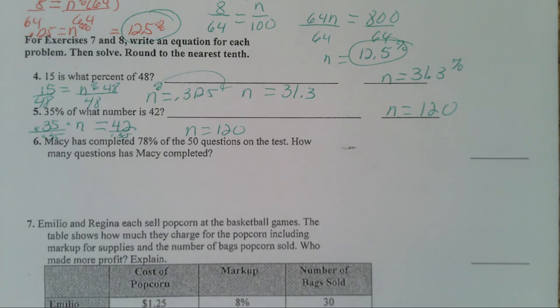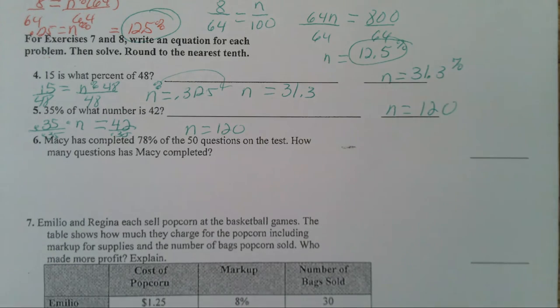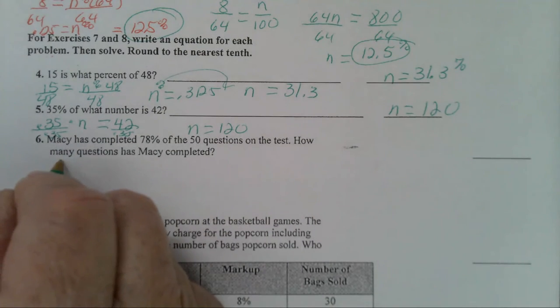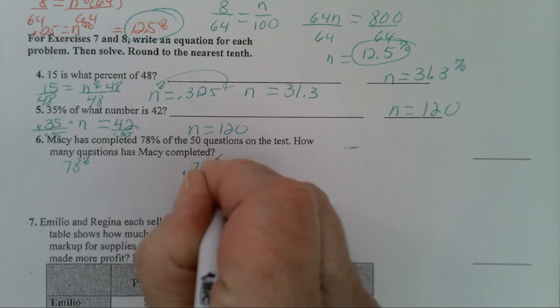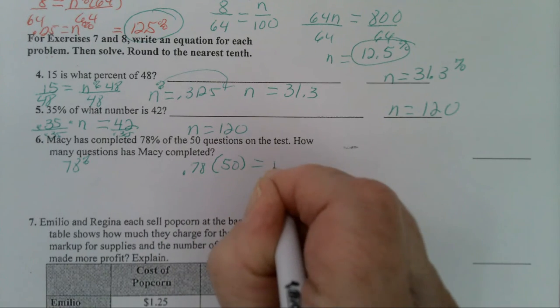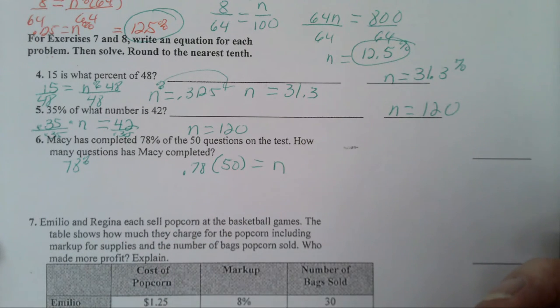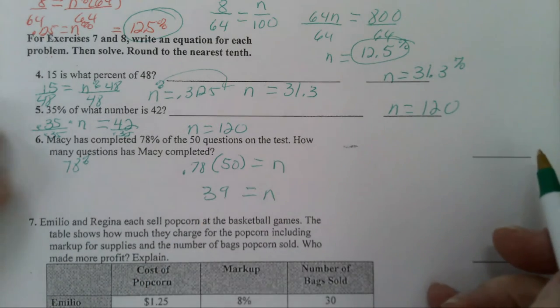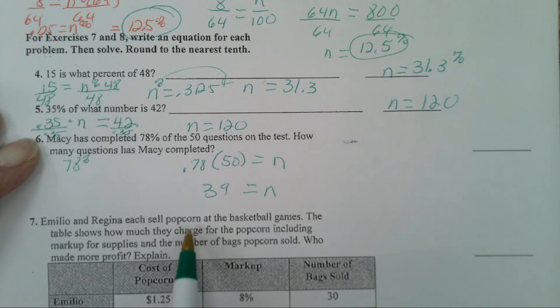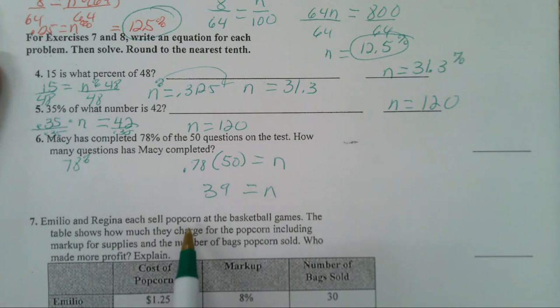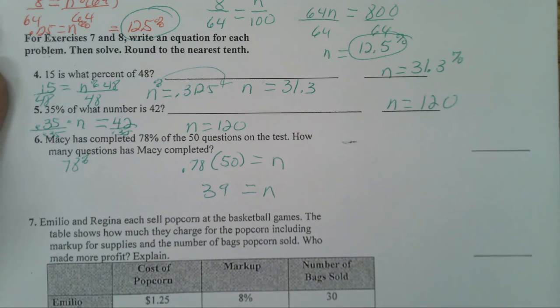When you write your equation. Now, Macy has completed 78% of the 50 questions on the test. How many questions has Macy completed? Here you want 78%, I'm going to change it to a decimal, so it's going to be 0.78 times 50 equals our unknown. Okay? So 50 times 0.78, she's completed 39 questions. Now does that make sense? Yes. 78% of 50. Well, 39 is more than half, so yes, that sounds like a reasonable answer.